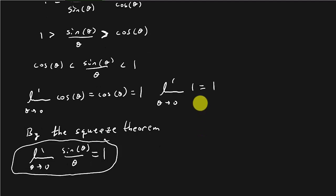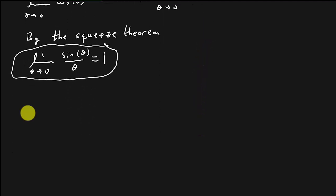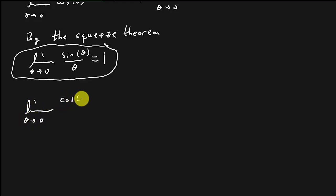The next limit we have to prove is the limit as theta goes to 0 of cosine theta minus 1 over theta is equal to 0. We need to show that.